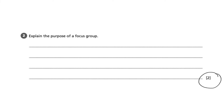For this question, we are asked to explain the purpose of a focus group. We can see in the bottom right hand corner that this question is worth two marks. The command word is 'explain,' and we know that when we explain we need to suggest reasons why.